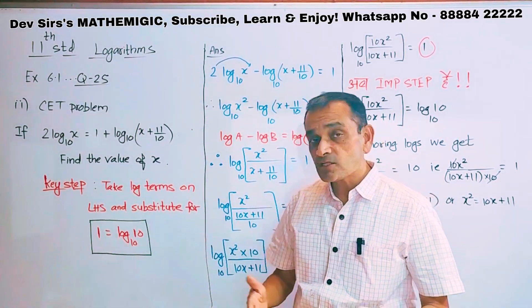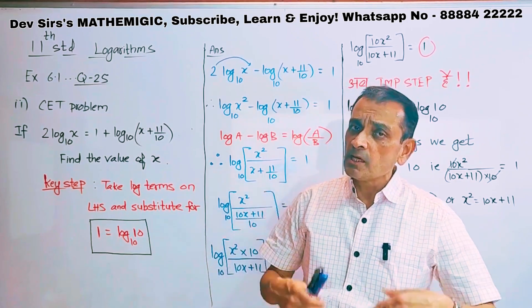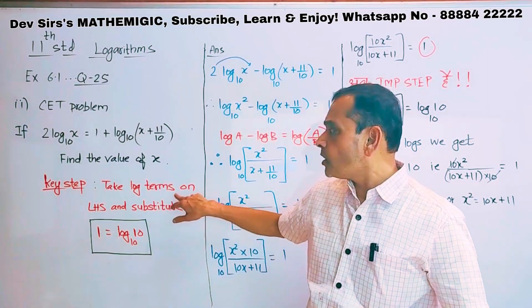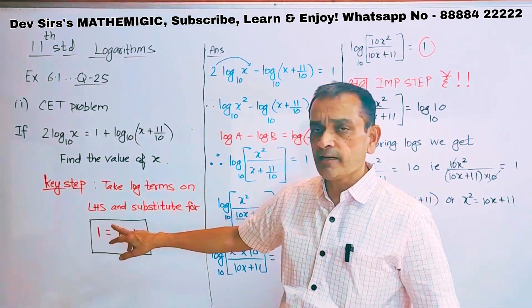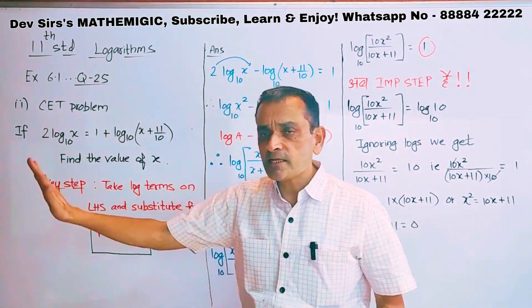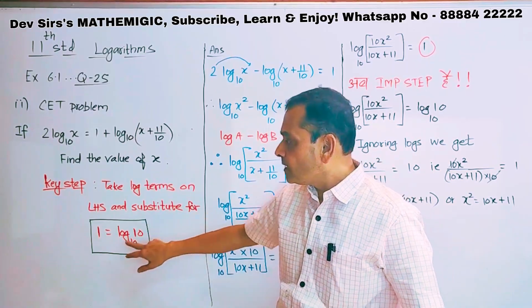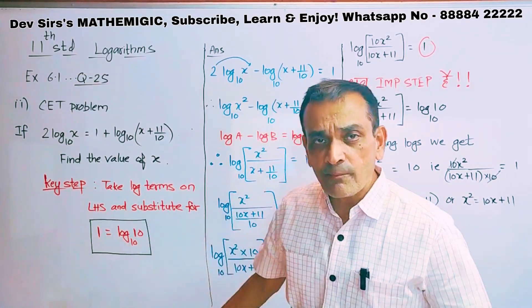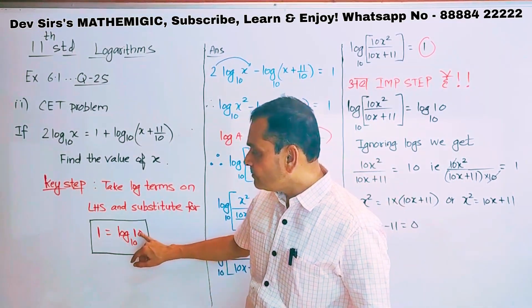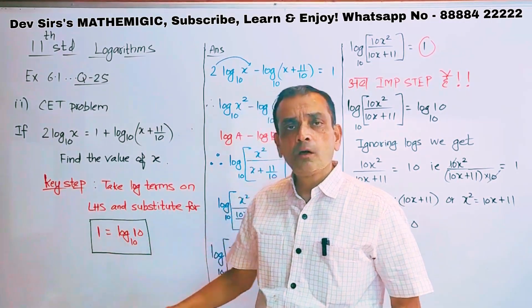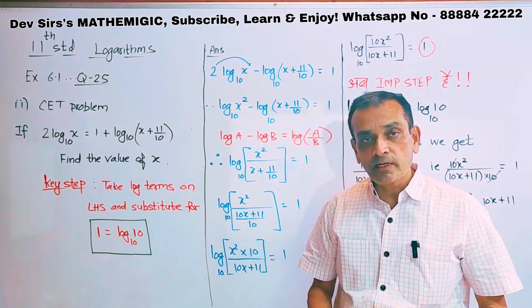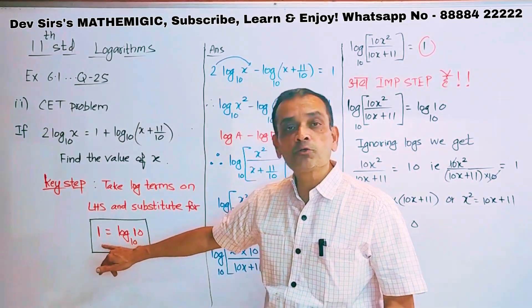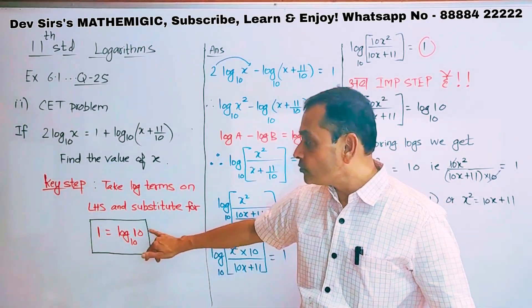Now there is a key step in this. As we have key steps for certain important problems which I always keep on repeating or telling you: take log terms on left hand side and substitute for 1 as log of 10 to the base 10. Log of 10 to the base 10 is 1. Log of 20 to the base 20 is 1. So later on I am going to substitute for 1 as log of 10 to the base 10.